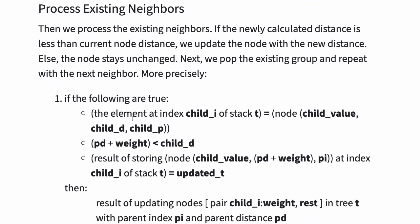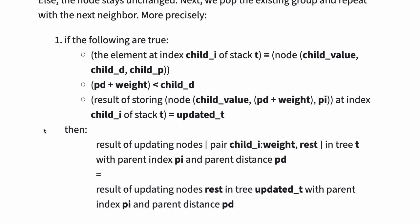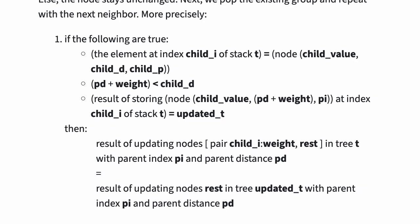Then we process the existing neighbors. If the newly calculated distance is less than the current node distance, we update the node with the new distance; else the node stays unchanged. Next, we pop the existing group and repeat with the next neighbor. More precisely, if the element at index child(i) of stack t is equal to node(child value, child d, child p), and pd plus weight is less than child d, and the result of storing node(child value, pd plus weight, pi) at index child(i) of stack t is equal to updated t, then the result of updating nodes pair(child i, weight) and rest, entry t with parent index pi and parent distance pd, is equal to the result of updating nodes rest, entry updated t with parent index pi and parent distance pd.